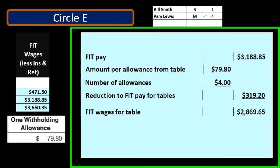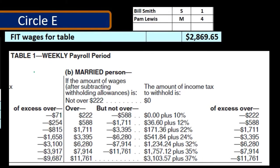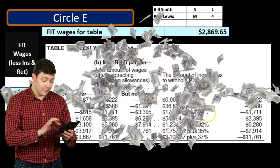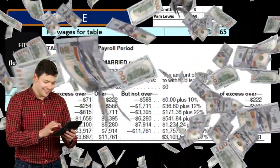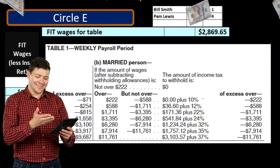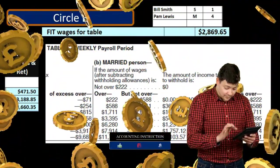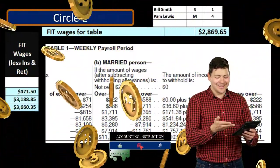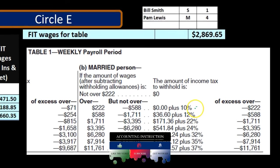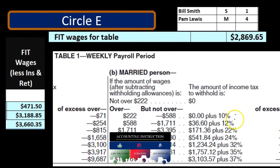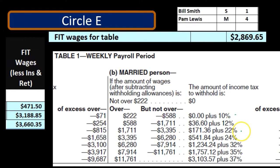Now we're back to the Circular E in the percentage area. This isn't like the regular tables where you just look up a number — we have to find the right bracket and then calculate the top tier amount and add it to the tier below. We need to find which bracket $2,869.65 falls into, and remember, being in a bracket doesn't mean all money is taxed at that rate — it's just the top portion taxed at 22%.